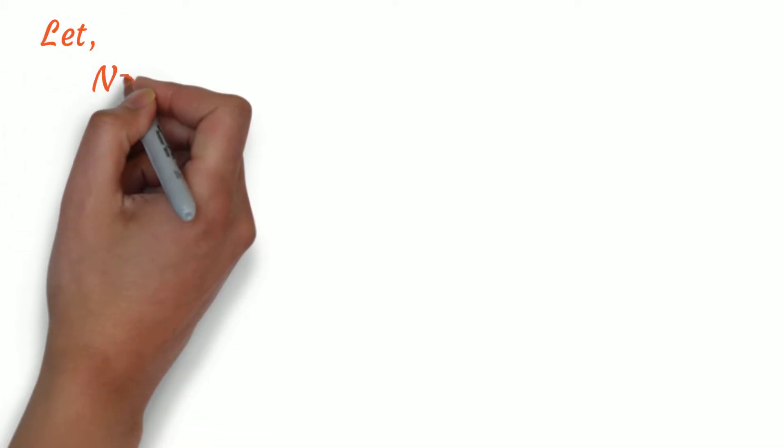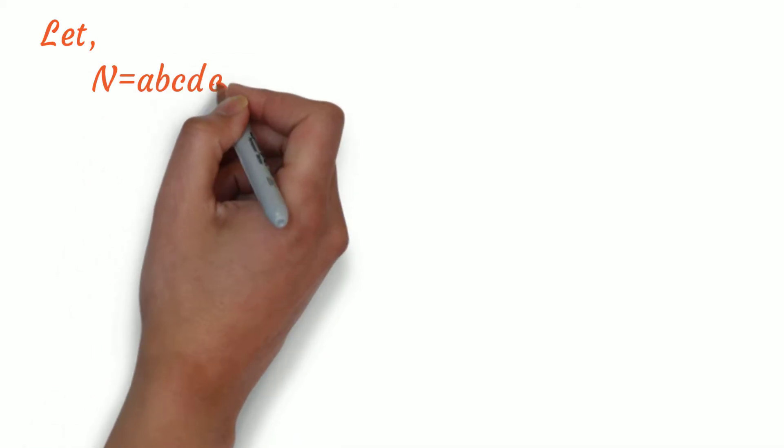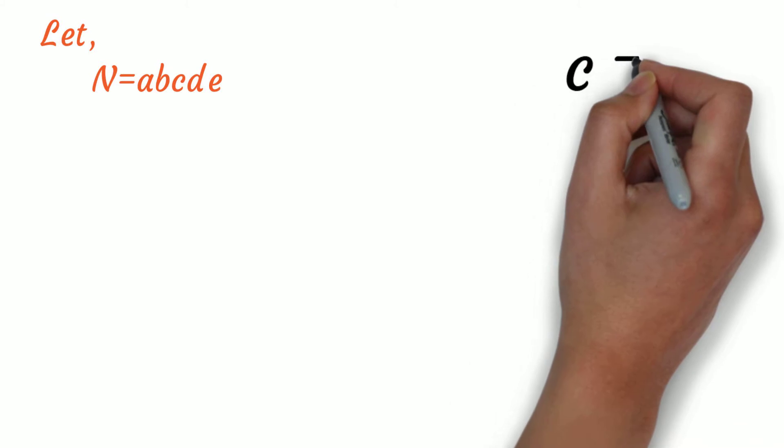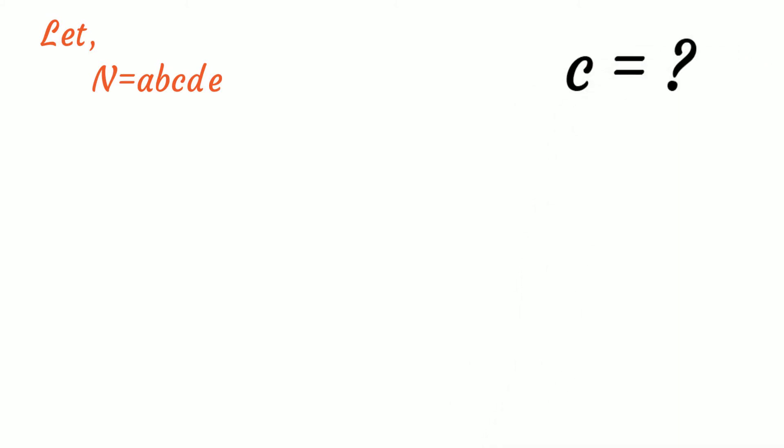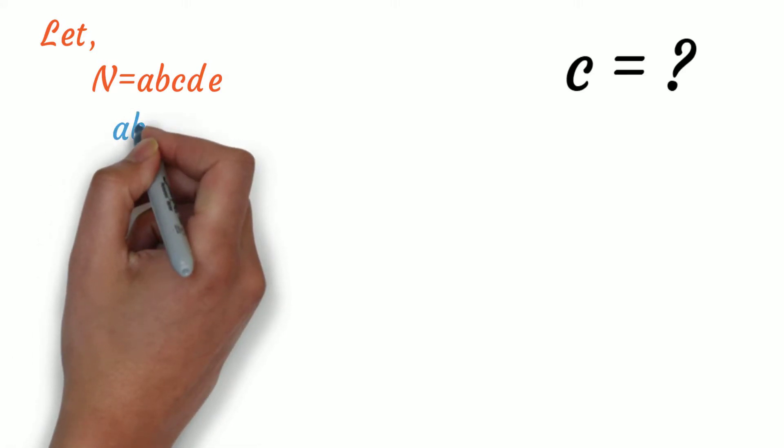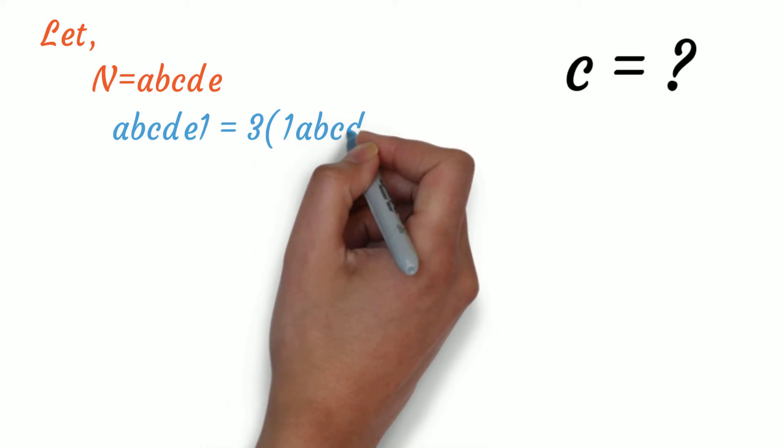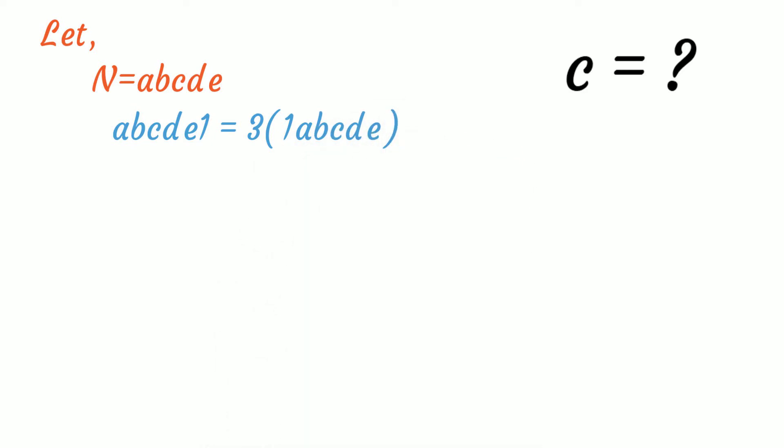Let's get started. Let's take the 5-digit number to be abcde. Our task is to find what value c represents. The question says the 6-digit number abcde1 equals 3 times the 6-digit number 1abcde.